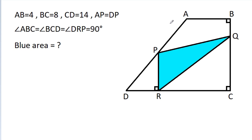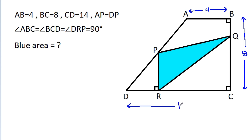In this video, we have given that AB is 4, BC is 8, and CD is 14. AP is equal to DP, and angle ABC is equal to angle BCD, and it is equal to angle BRP, that is 90 degrees. We have to find the blue area.